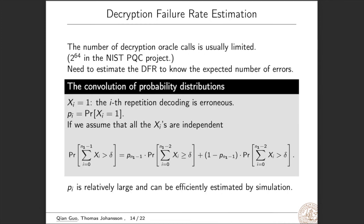The next question is to estimate the decryption failure rate. It is because the number of decryption error calls is usually limited. In the NIST PQC project, for instance, the limit is 2 to 64. So we need to estimate the DFR to know the expected number of errors. Here we use the method called the convolution of probability distributions.